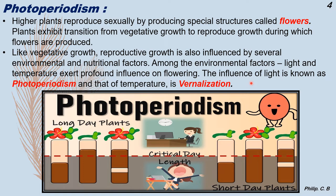For both vegetative and reproductive growth, environmental and nutritional factors are very important. Considering environmental factors, mainly light and temperature: when we say light, that is photoperiodism — splitting the term, 'photo' means light, 'periodism' is the period taken for flowering in the presence of light. For temperature, the process is termed vernalization.